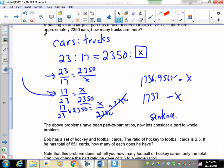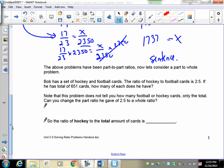Now, every question up to this point has been a part-to-part ratio. We're now going to move into what's called part-to-whole ratios. Bob has a set of hockey cards and football cards. The ratio of hockey to football cards is 2 to 5. He has a total of 651 cards. How many of each does he have? Note that this problem does not tell you how many football or hockey cards, only the total. Can you change the part-to-ratio he gave you of 2 to 5 to a whole ratio?